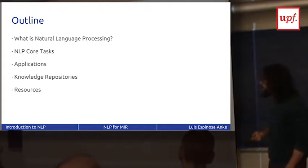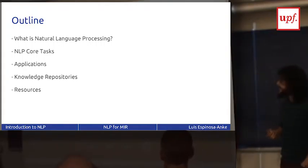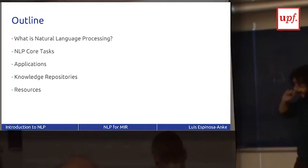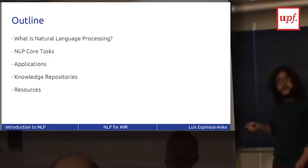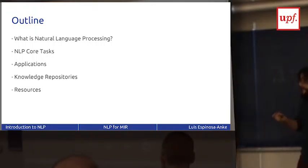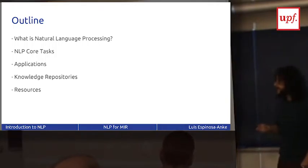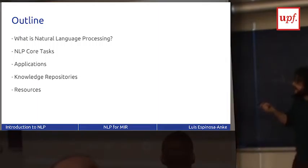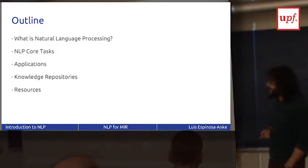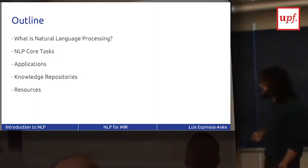I'm going to start with a loose definition of what natural language processing is, and break it down into two types of tasks: what we call the core tasks in NLP — any type of intelligent text processing you have to do automatically is going to rely on some, if not all, of these core tasks — and then the applications, the intelligent things you can do based on these core tasks.